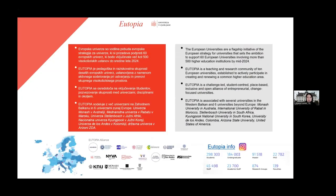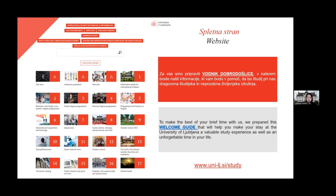The University of Ljubljana is also part of Association Utopia, which includes nine other universities from Europe. Utopia aims to promote the mobility of students and staff through new ways of joint teaching, learning and cross-border cooperation. We warmly recommend you to regularly check our website StudyOLJ where you can find useful information about study, exchange opportunities, extracurricular activities, and also carefully read the welcome guide for detailed information about arriving to Slovenia.